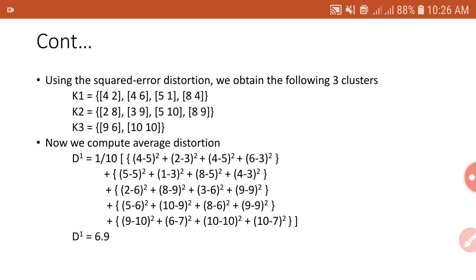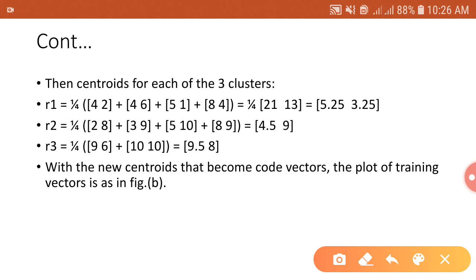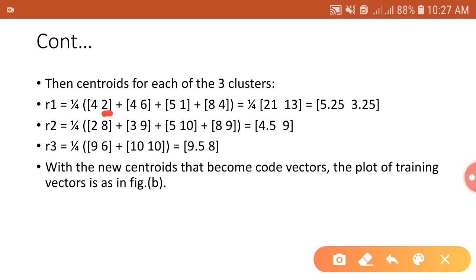The next step is to compute the centroid for each cluster by taking the mean of all training vectors in that cluster. In cluster K1, there are 4 vectors: (4,2), (4,6), (5,1), and (8,4). The sum of x-values is 4+4+5+8 = 21 and the sum of y-values is 2+6+1+4 = 13. Dividing by 4 gives the new code vector R1 = (5.25, 3.25).